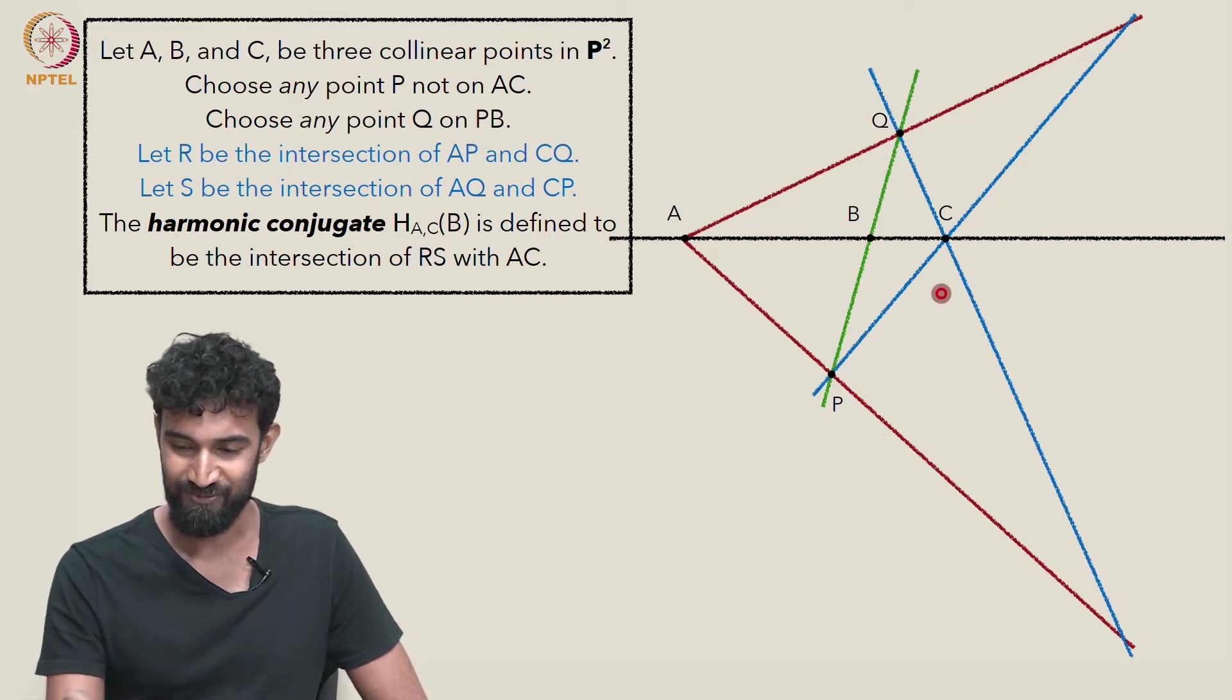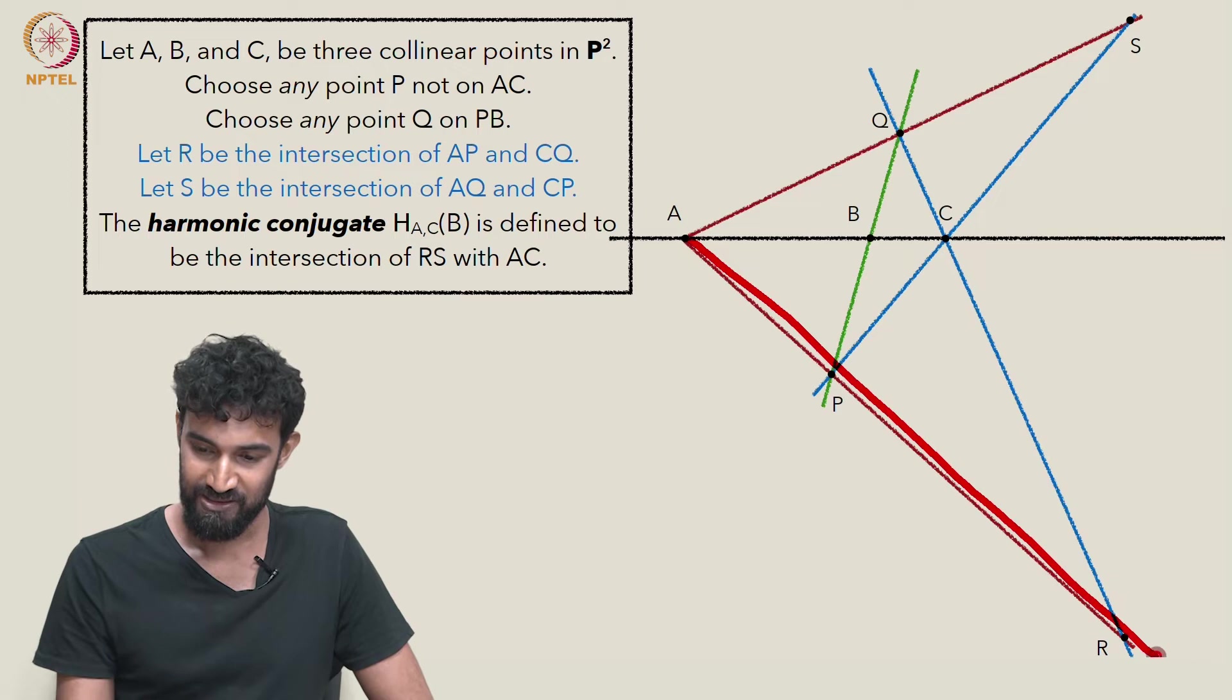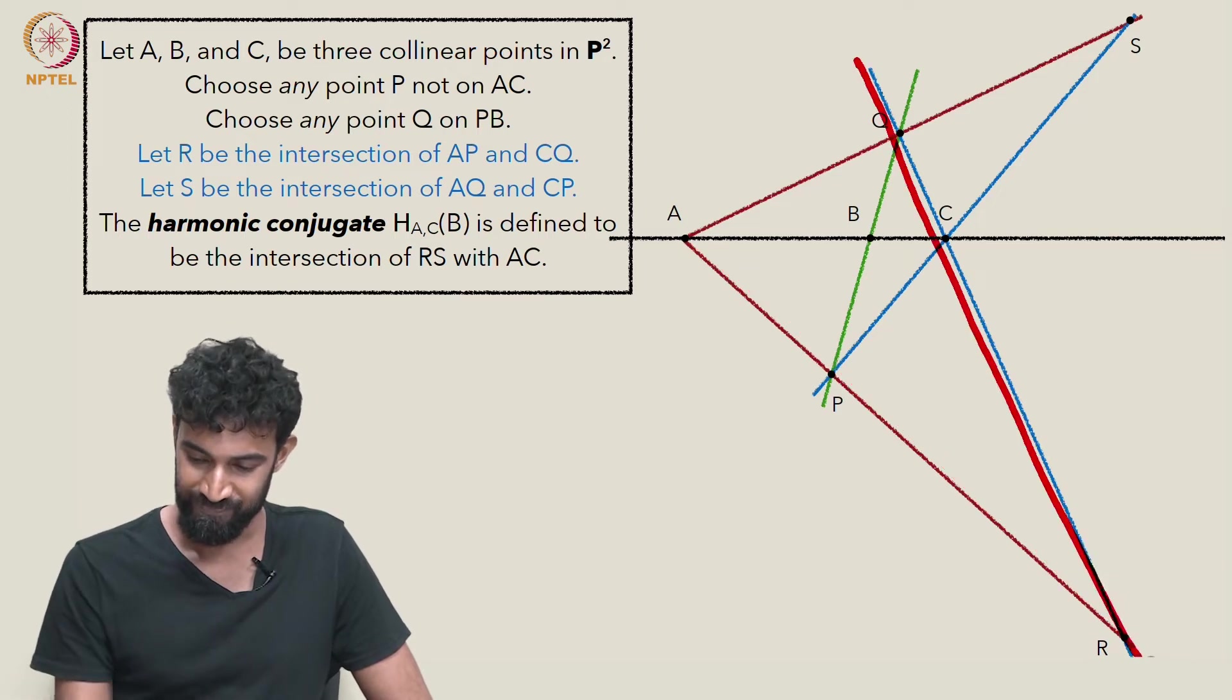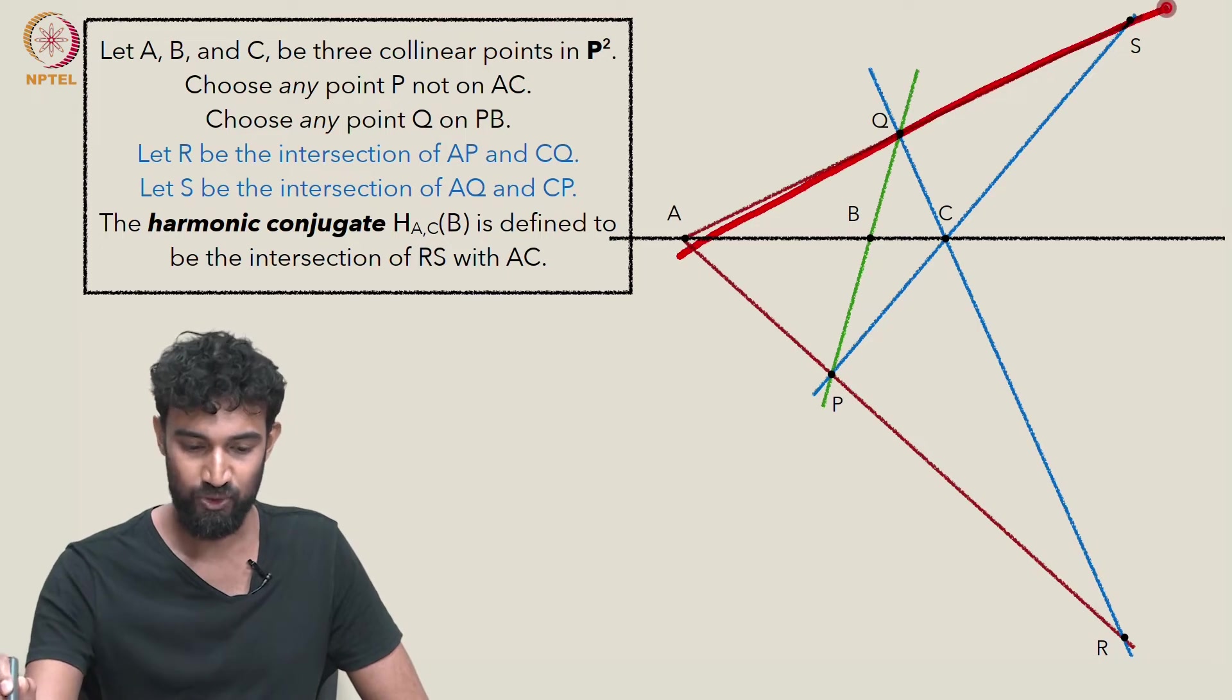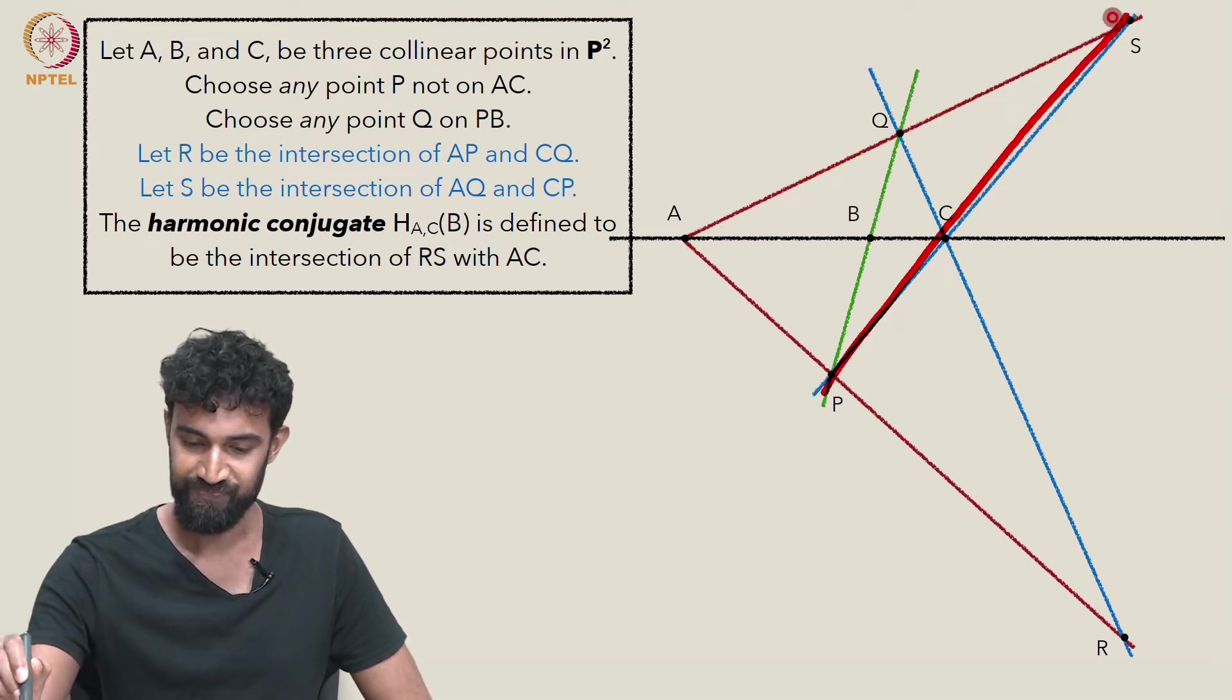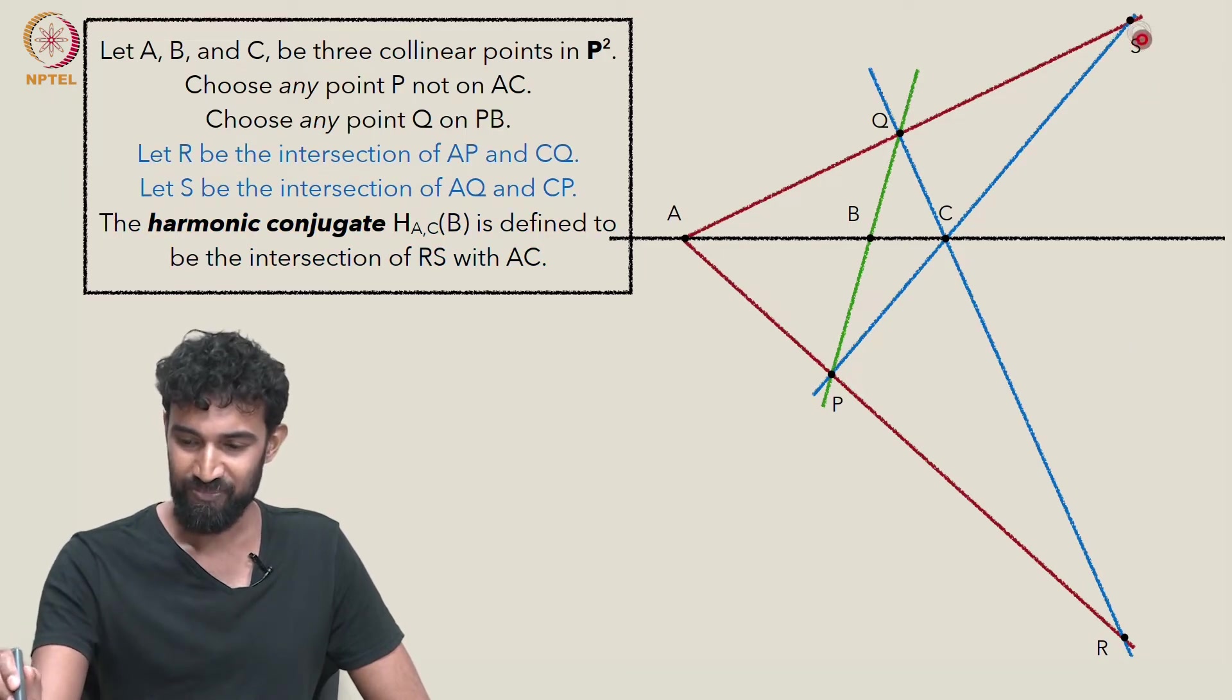Now, this gives us new points, R and S. But they're not where we'd like them to be. R is here. R is the intersection of AP and CQ. S is the intersection of AQ and CP. So it's over here.